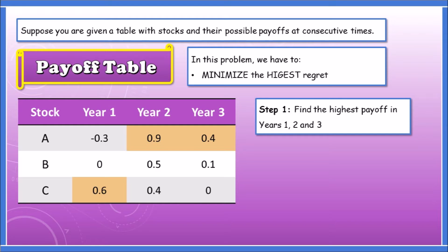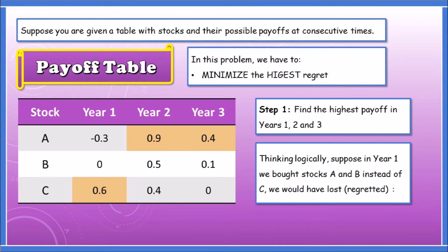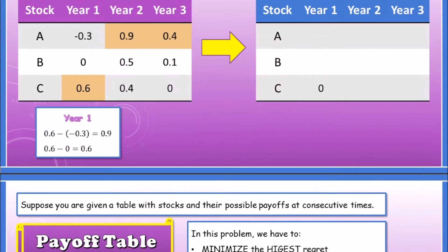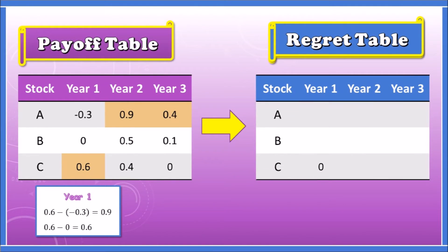The criteria for minimax regret is that we need to stop here and think logically. Suppose in Year 1 we bought stocks A and B instead of C. If we did that, we would have lost money, and regretted 0.6 minus each term.